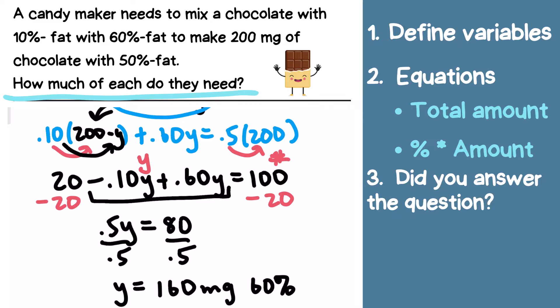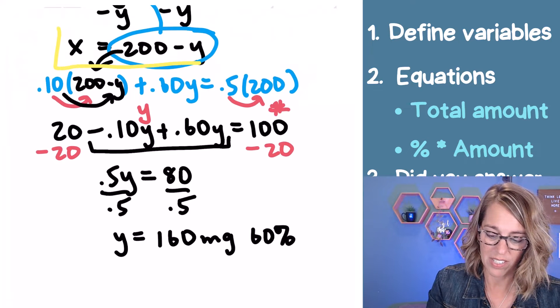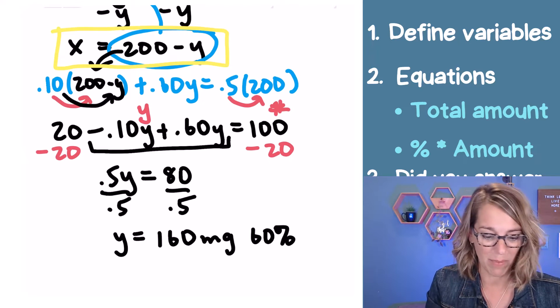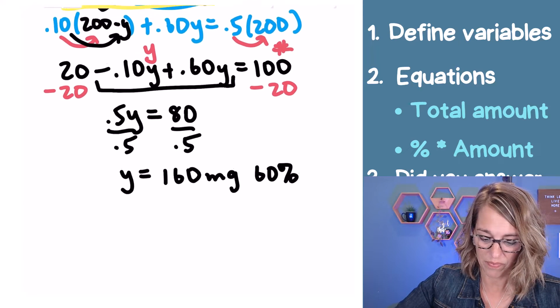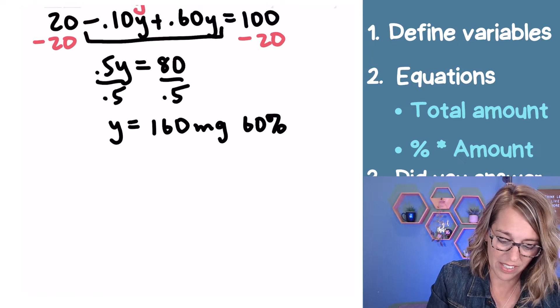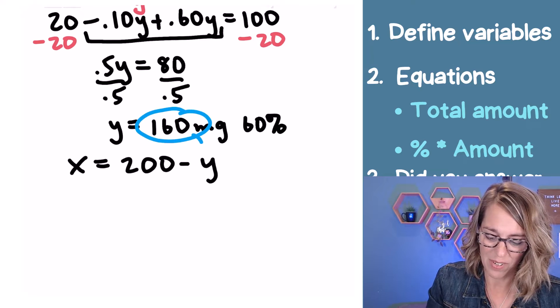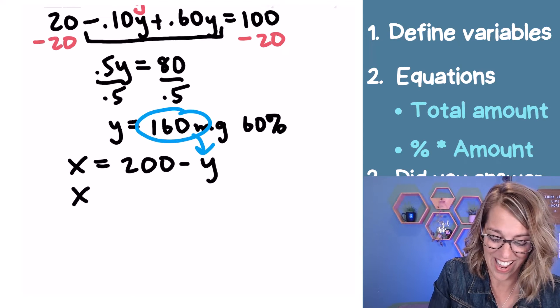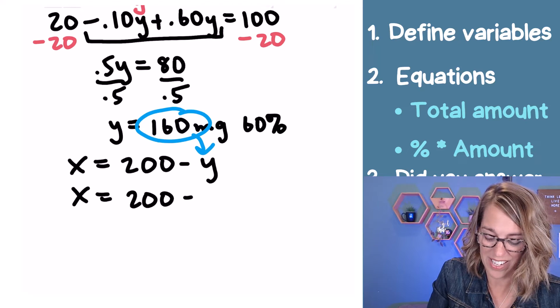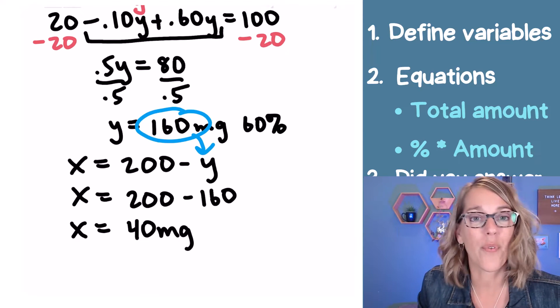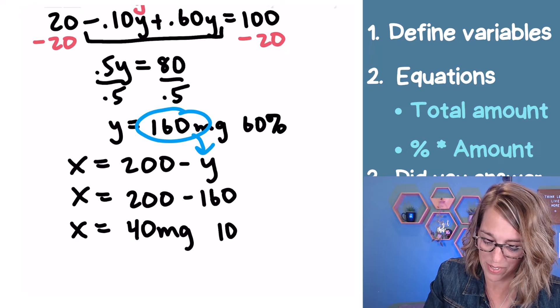So I've got Y, but I can go right back up to my equation and solve for X. Let me go ahead and bring that equation for X down. It's X is equal to 200 minus Y, but I know that Y is equal to 160. You can probably do this in your head even, and I get X is 200 minus 160, and X is equal to 40. So it's our amount, 40 milligrams of the 10% chocolate.